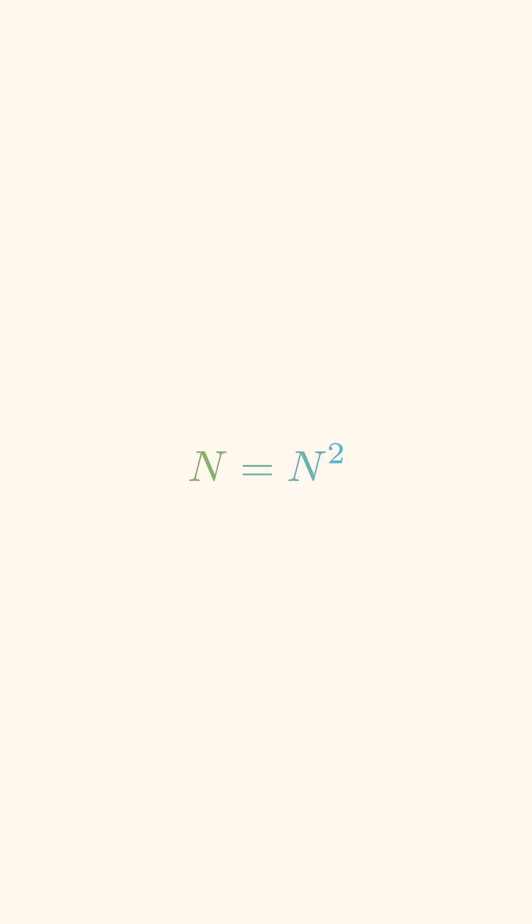Now, the only positive number that is its own square is 1. Therefore, n must be equal to 1.